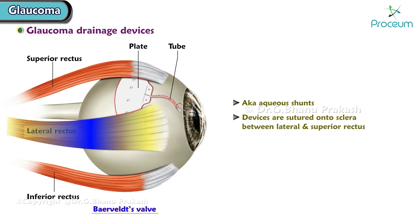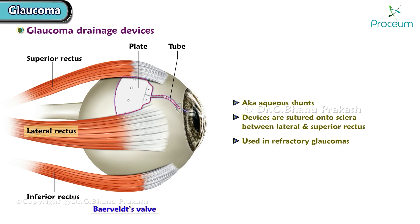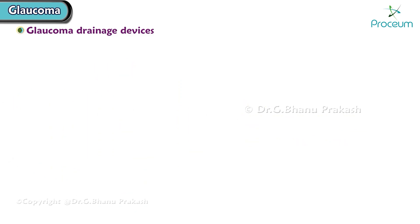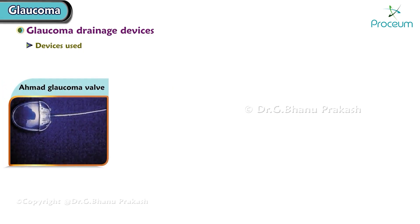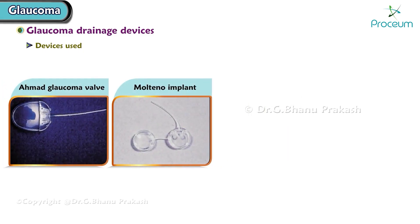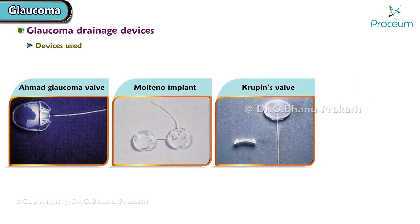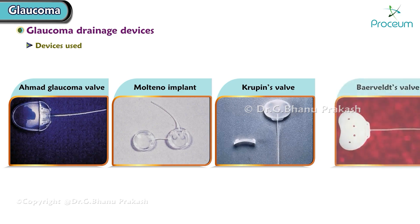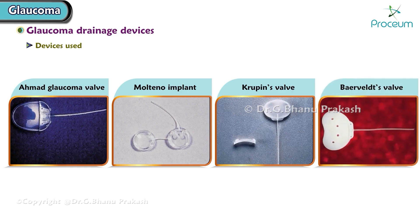Glaucoma drainage devices, also known as aqueous shunts, are sutured onto the sclera between the lateral and superior rectus muscles. These are used in refractory glaucoma cases. Devices used include the Ahmed glaucoma valve, Molteno implant, Krupin valve, and Baerveldt valve.